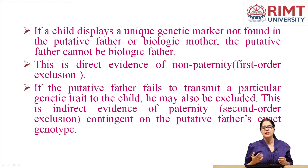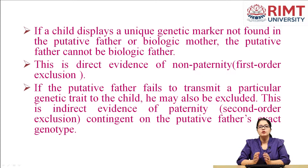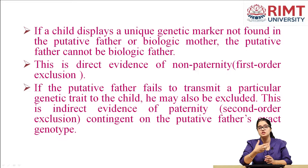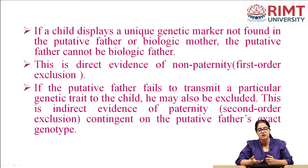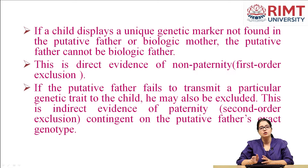This is known as direct evidence of non-paternity and is also known as first order exclusion. In forensic science, most analyses are for exclusion rather than inclusion. We can very well say that a person is not a father, but we cannot definitively say that a person is the father — that can be a topic of debate. If a putative father fails to transmit a particular genetic trait to the child, he may also be excluded, though that does not necessarily mean he is not the biological father — he may have simply failed to transfer that gene or trait to the child.